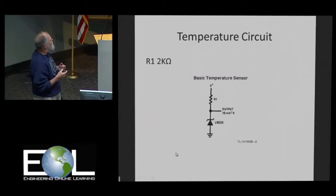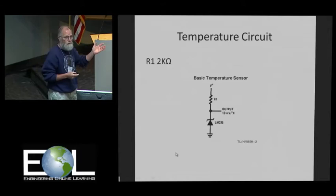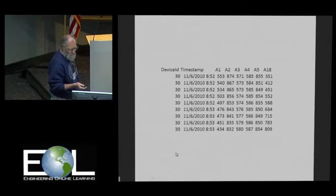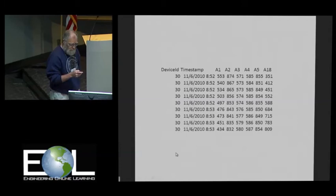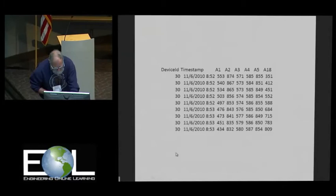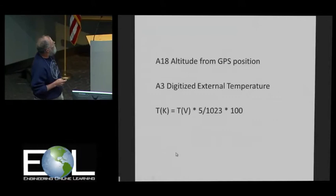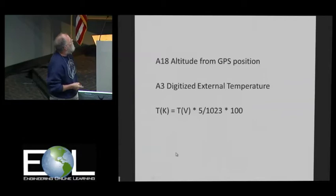Here's the standard Stratostat temperature sensor. This is what we used, the LM335. It's a very simple device, so I can have solar system students use it. If you're more into electronics, it's a very temperature sensitive zener diode. This is the data file that comes back out of the Stratostat satellite command module. The important columns are A3, which is the digitized temperature, and A18, which is the altitude. From A3, we can extract the temperature in Kelvin by just doing the simple conversion.